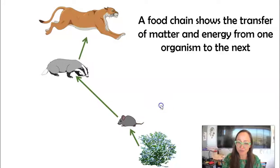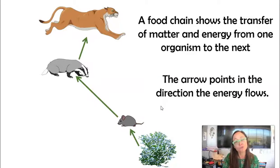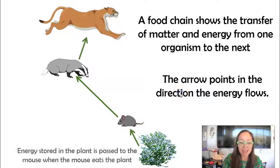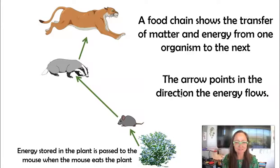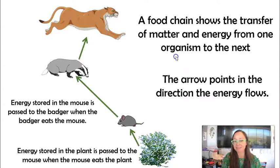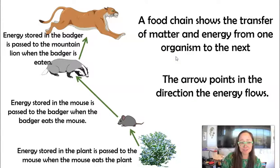In this food chain, each arrow is showing the direction energy flows. The energy stored in the bonds in the cells of the plants is going to be passed to the mouse when the mouse eats that plant. And then the energy stored in the body tissues of that mouse will be passed to the badger when the badger eats the mouse, and so on as the mountain lion eats the badger. This is showing the flow of energy in this food chain.